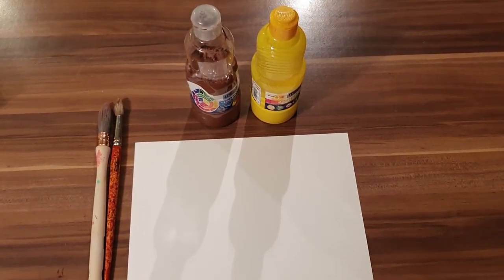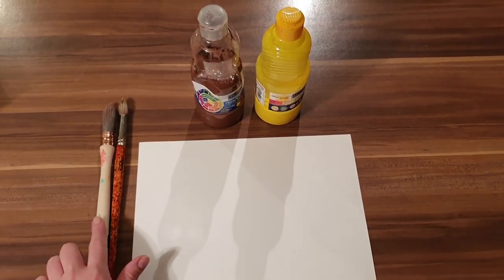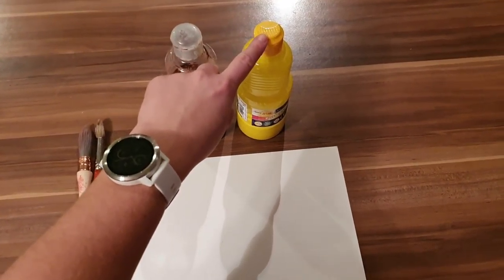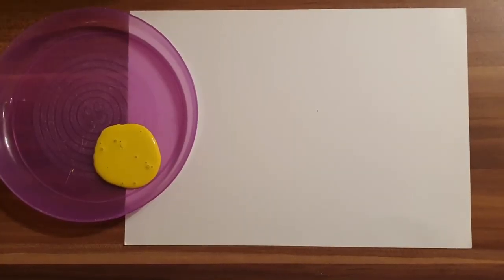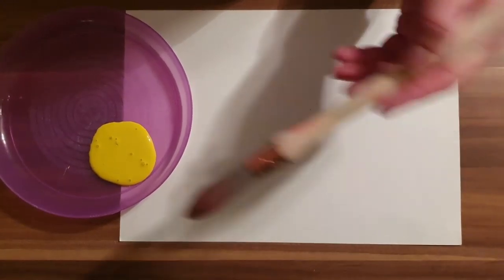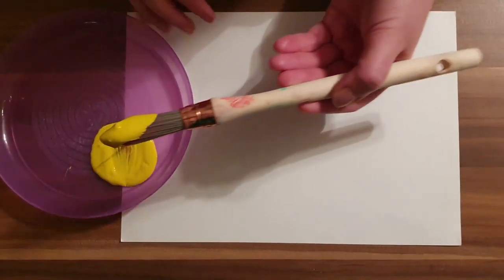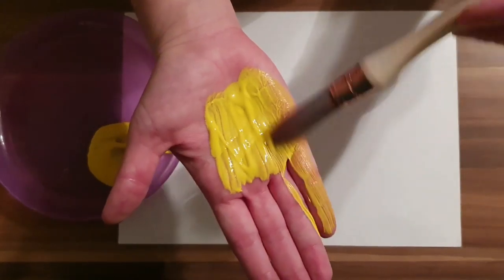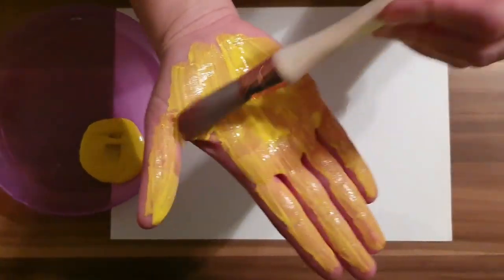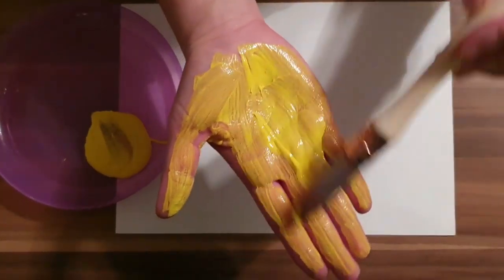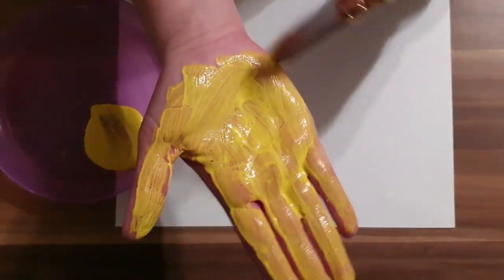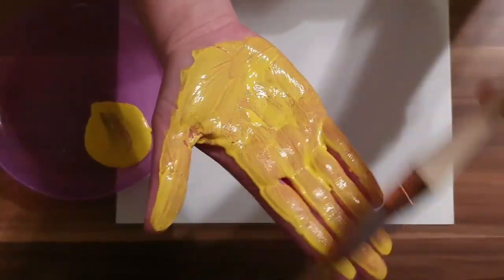You will need a piece of card, two paintbrushes, some brown paint, and some yellow paint. The first thing you need to do is squeeze some yellow paint onto a plate, then you need to get your paintbrush and you're going to paint your hand just like this.